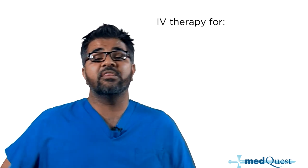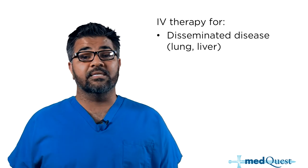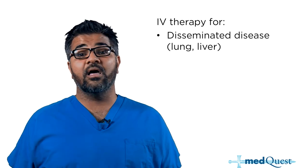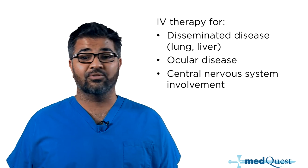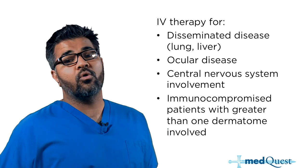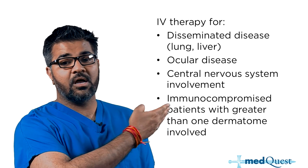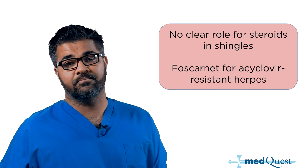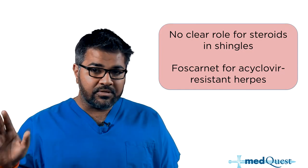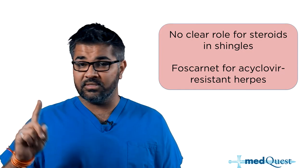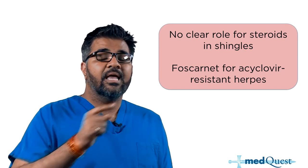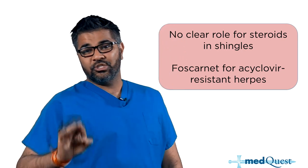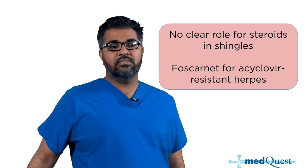IV therapy is indicated for people with disseminated disease — such as herpes in the lung or liver — ocular disease, central nervous system involvement, or anyone who is immunocompromised with more than one dermatome involved. There is no role for steroids in shingles — it doesn't help with pain later. If the viral culture shows acyclovir resistance, switch to Foscarnet.